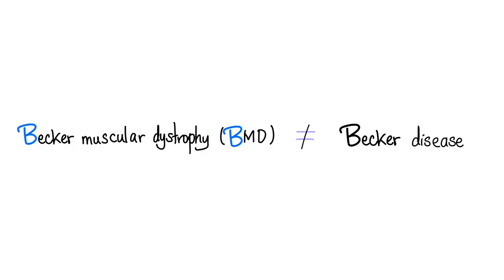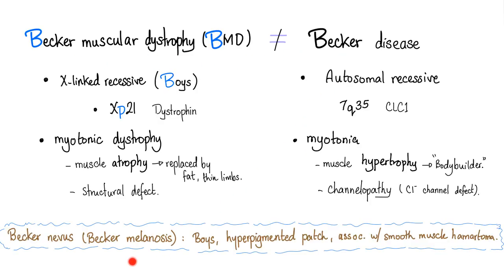Let's get our facts straight. Becker muscular dystrophy is not the same as Becker disease. There are three different diseases in medicine that have the name Becker: Becker muscular dystrophy (BMD), Becker disease, and Becker nevus or Becker melanosis. Let's talk about Becker muscular dystrophy and the difference between Becker muscular dystrophy and Becker disease.